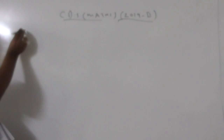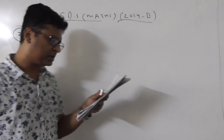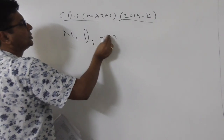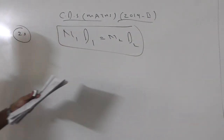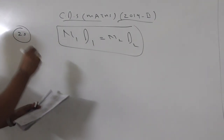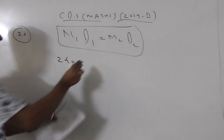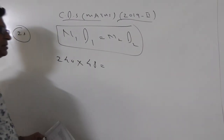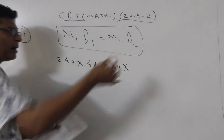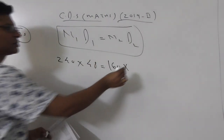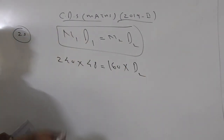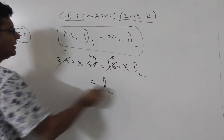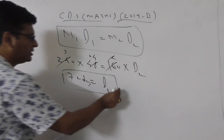Question number 25 is a direct question on time and work using the chain rule: n₁d₁ = n₂d₂. A stock of food grains is enough for 240 men for 48 days. How long will the same stock last for 160 men? So 240 × 48 = 160 × d₂. Solving: d₂ = 72 days, which is option A.